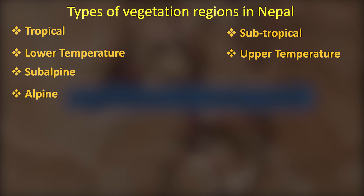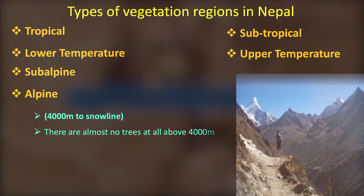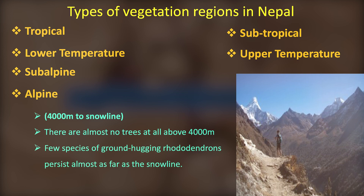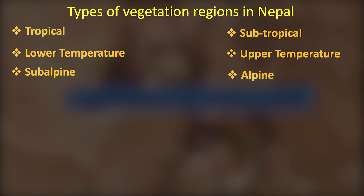Alpine vegetation is found above 4,000 metres. There are very few plant species here. Plants include Rhododendron, Pines, and some groundhugging plants. Near the snow line in mountainous regions, microorganisms are also found.